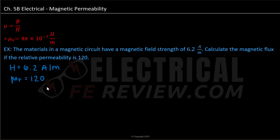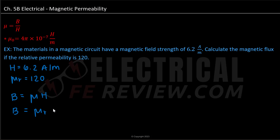Because we aren't given our magnetic permeability, we need to solve for it by multiplying our relative permeability times our permeability of free space. Let's rearrange our formula to solve for magnetic flux: B is equal to magnetic permeability times magnetic field strength. We can expand this as μr times μ₀ multiplied by H.